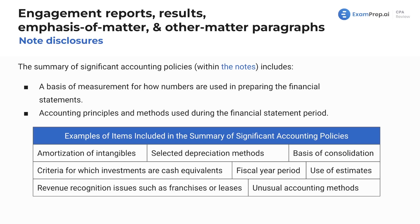Here are note disclosures. You can think of these paragraphs as similar to note disclosures. This is a slide from FAR going over the notes of the financial statements, and it's important to understand them because you're trying to give additional paragraphs on them. The summary of significant accounting policies within the notes of the financial statements includes items such as amortization of intangibles, selected depreciation methods — as an auditor you may give some sort of extra paragraph based on one of these items — basis of consolidation, and criteria for which investments are cash equivalents. You as the auditor may have to give an additional paragraph on one of these items.